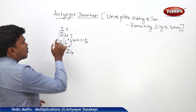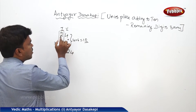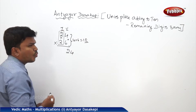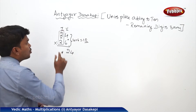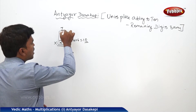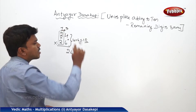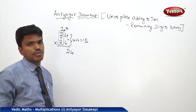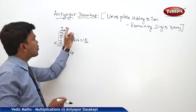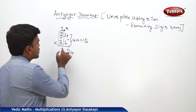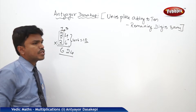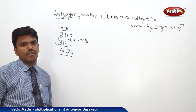Now, the tens place digit is 2. This should be multiplied with its next number. What is the next number of 2? It is 3. So what is 2 into 3? It is 6. So your answer is 624.